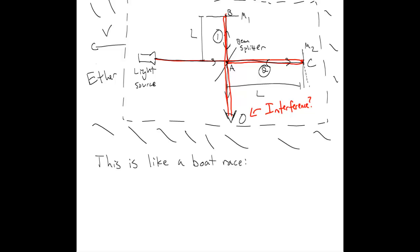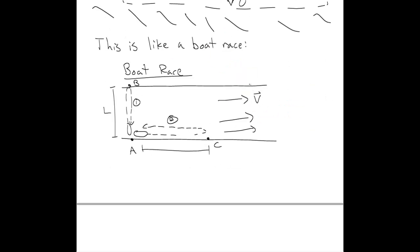So we can see this in a boat race. Imagine the following boat race. We have a river flowing to the right, and we have two boats that are racing. One boat goes across the river from A to B, and another boat, boat 2, goes down the river and then back up from A to C.